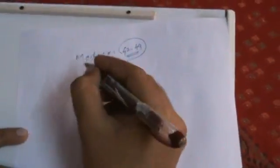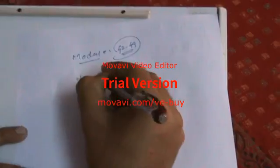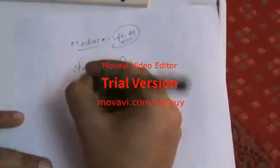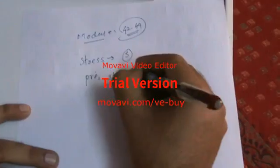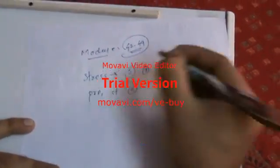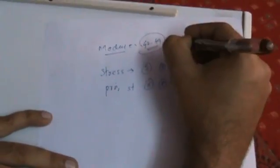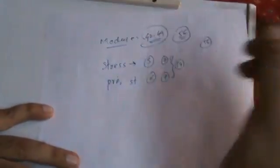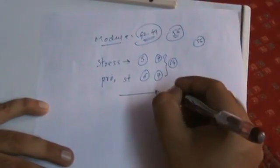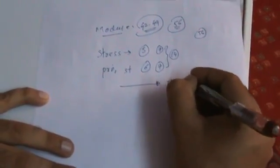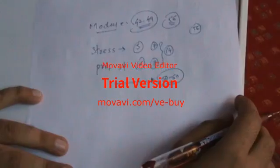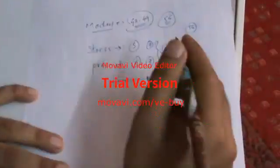Up to Module 4, you are able to get 42 to 49 marks using this method. Adding stresses in beams from Module 5 gives 7 more marks, and principal stress from Module 6 gives another 7 marks — that is an additional 14 marks. On average, you can get 56 marks overall, meaning around 50 to 60 marks following this strategy.